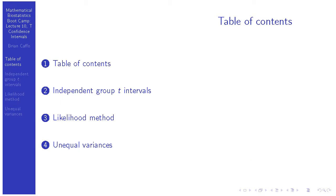So in this lecture, we're going to go through group t-intervals, whereas the last lecture we did t-intervals for a single mean, or you could do those intervals for a group where the observations were paired. But now we're going to talk about instances where we have two independent groups. We'll briefly talk about a method to construct a likelihood, and then we'll talk about what you do if you have unequal variances.